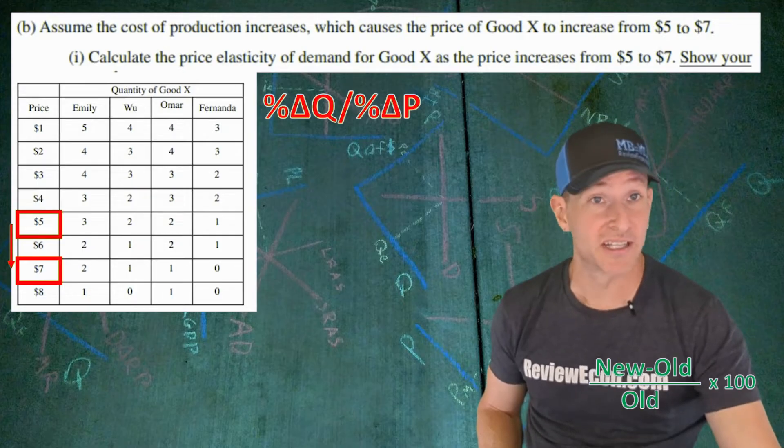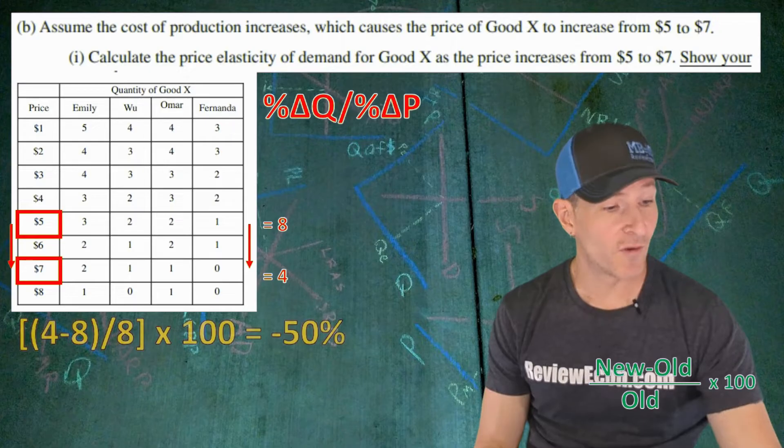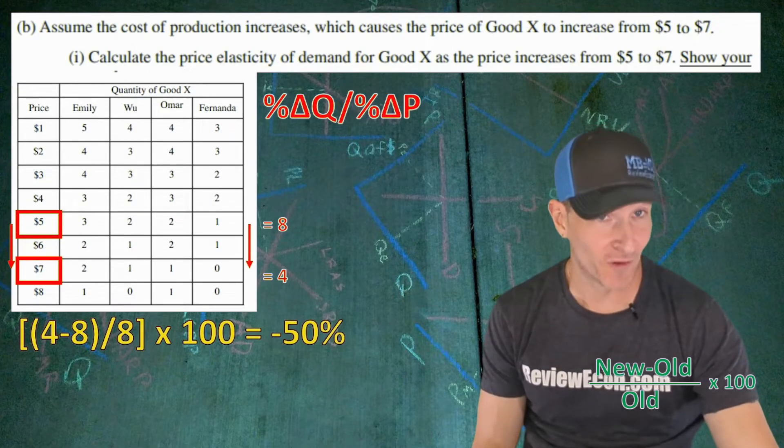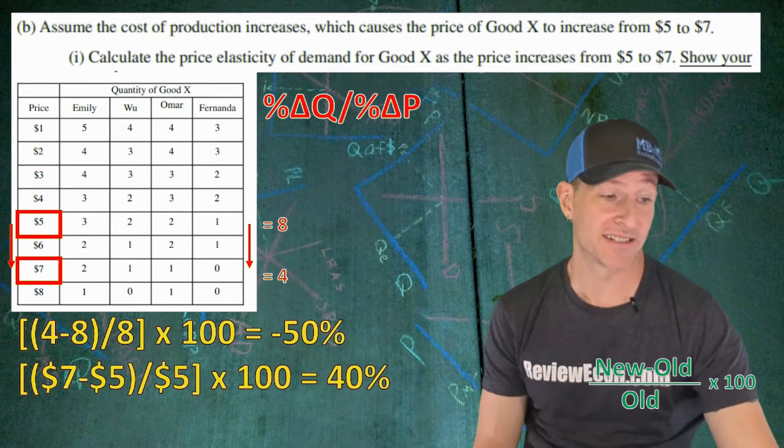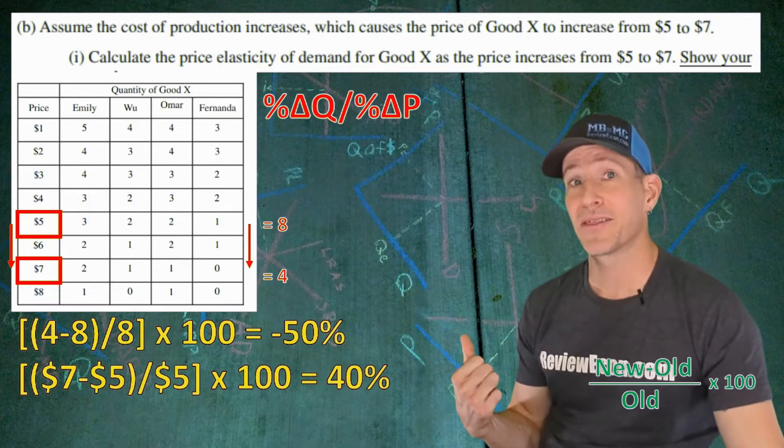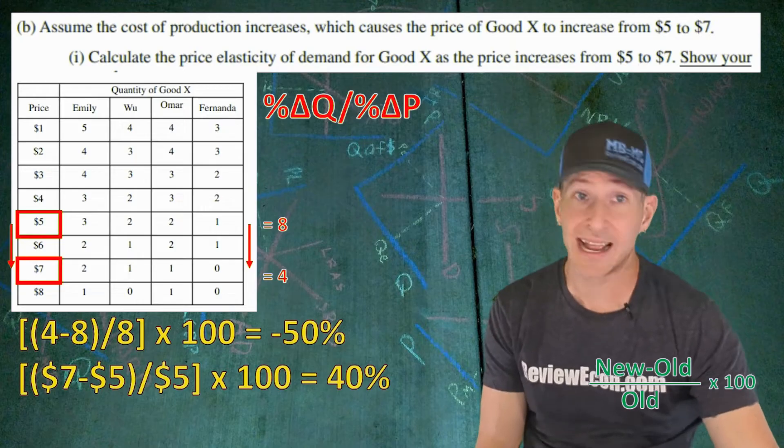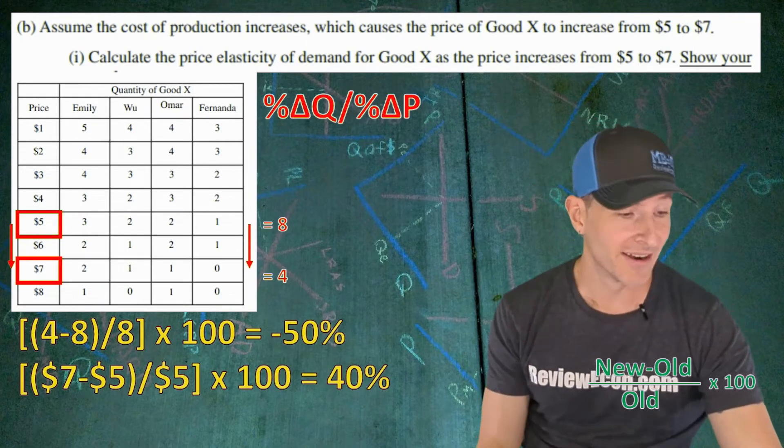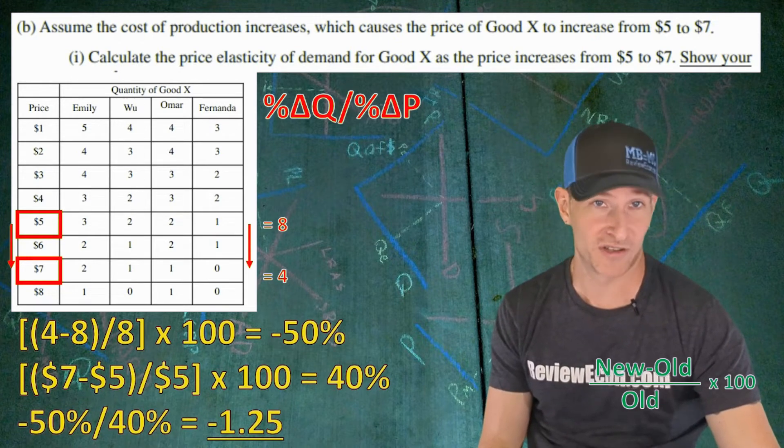So, we know that the price is going to increase from $5 up to $7, and the quantity demanded will decrease from eight units down to four units. The percentage change of quantity is negative 50% going from eight units down to four units, and the percentage change of price is 40% as the price increases from $5 to $7. And we have the endpoint method math right there for us. Once you've calculated the percentage change of quantity and the percentage change of price, plug them into the percentage change formula up there,